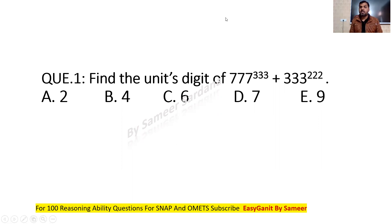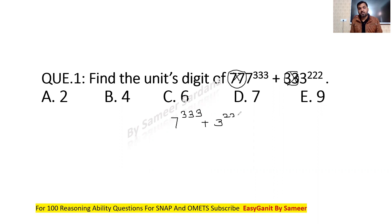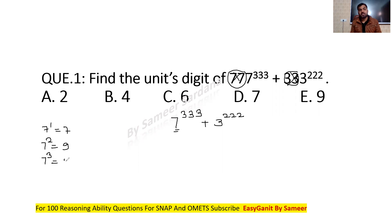Let's look at the first question: find the unit digit of 777 raised to power 333 plus 333 raised to power 322. These questions are based on cyclicity. The unit digit depends only on the unit digit, so basically we are finding the unit digit of 7^333 + 3^322. You should know that the cyclicity of 7 is 4. Cyclicity means the powers after which the unit digits start repeating. Seven power 1 unit digit is 7, seven power 2 is 9, seven power 3 is 3, seven power 4 is 1.